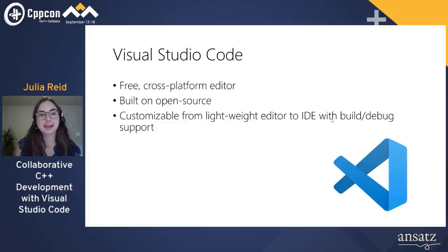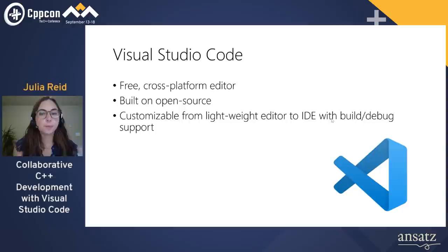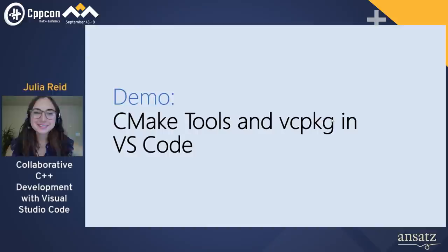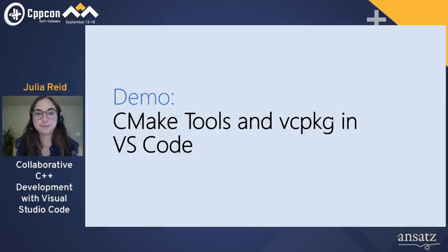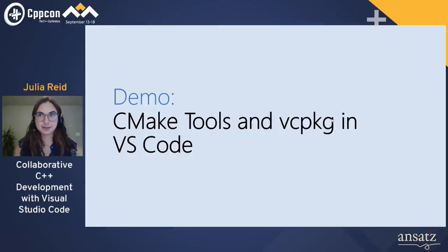Both CMake and vcpkg have great integration with Visual Studio Code, which I'm going to demo today. VS Code is a free, cross-platform editor built on open source — customizable from a lightweight editor for quick edits to a full IDE-like experience with build, debug, and remote development support. In this first demo, I'll use CMake Tools — a CMake extension in VS Code — and vcpkg to configure, build, and debug OpenRCT2, an open source CMake project, on my Mac laptop, and then SSH into a Linux VM to do the same thing.